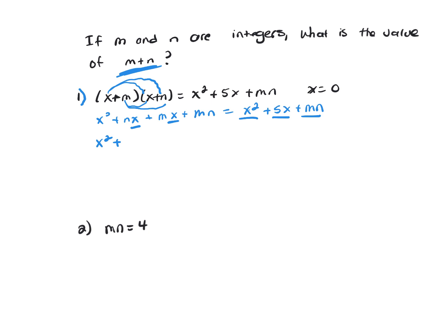So let's factor that x out, and that would leave me n plus m times x plus mn equals x squared plus 5x plus mn.